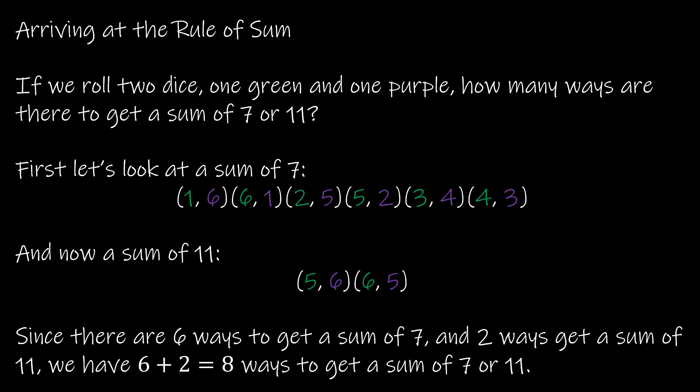and this one throws a lot of people off, but a lot of people say, well, I can get a one and a six, or I can get a two and a five, or I can get a three and a four, which is very true. But a one on the green and a six on the purple is different than a six on the green and a one on the purple. So we're talking about not the number of combinations, but the number of permutations. But for now, just stick with me. One and six is not the same outcome as six and one. Two and five and five and two are different outcomes. Three and four and four and three are different outcomes.